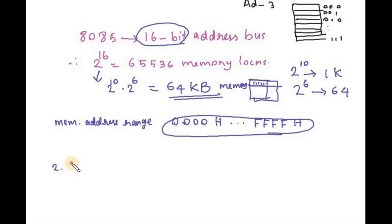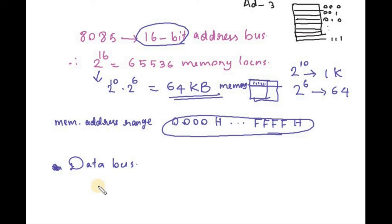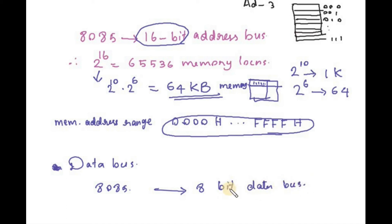The second type of bus is the data bus. The data bus carries data. In the 8085, the data bus size is 8 bits. So to summarize: the 8085 has an 8-bit data bus and a 16-bit address bus.